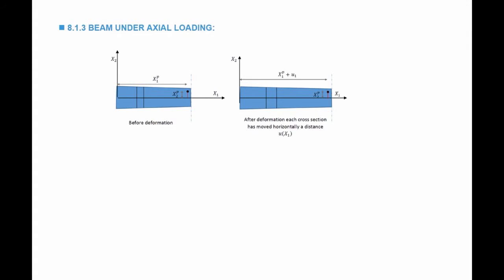Before deformation, any point on the beam will have coordinates x2p in the vertical direction and x1p in the horizontal direction. After deformation, we assume that the cross-sections of the beam have moved horizontally with a horizontal function u1, a function of the position in the x1 direction. The new horizontal position has increased by u1, so the new position is equal to the old position plus u1. The displacement, which is the new position minus the old position, is equal to (u1, 0, 0).